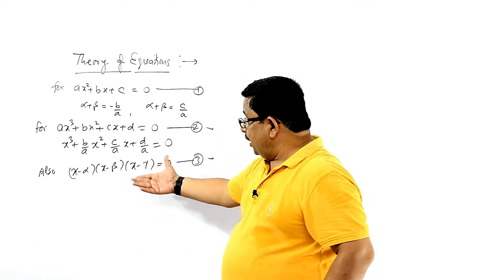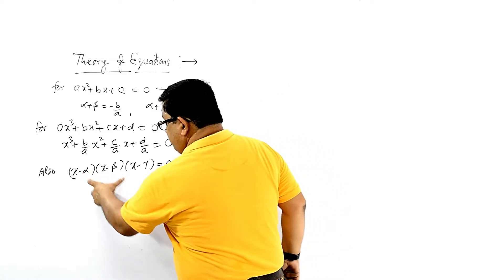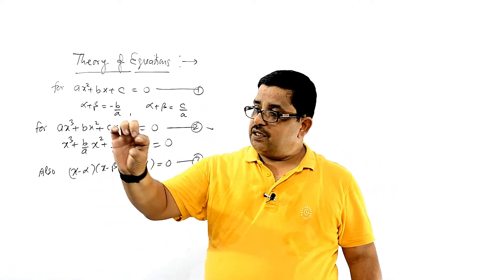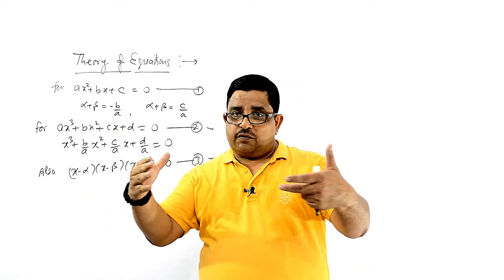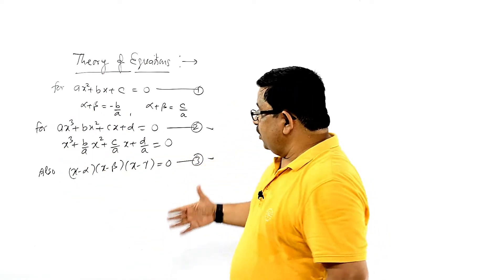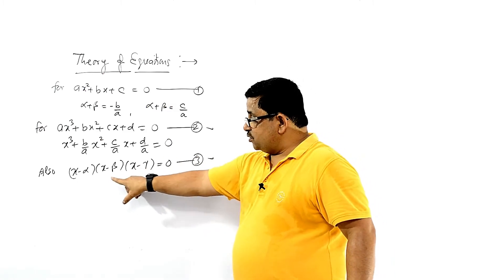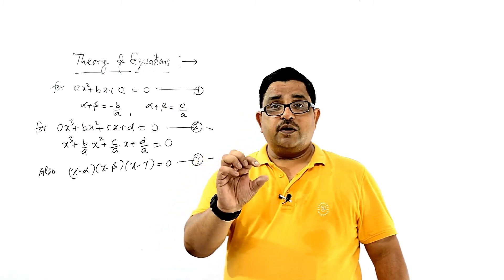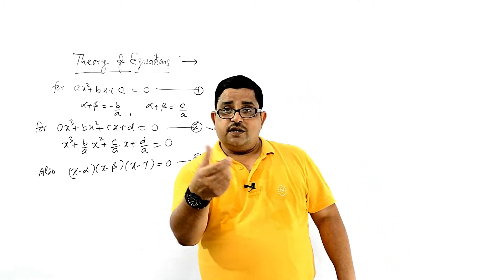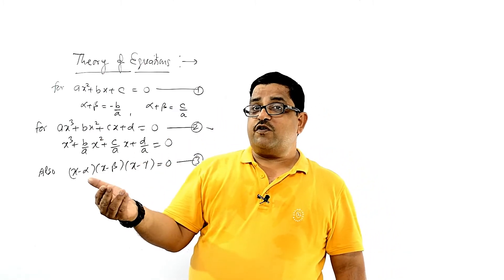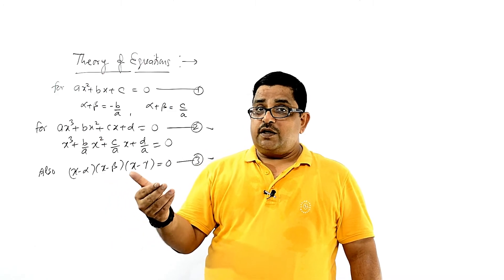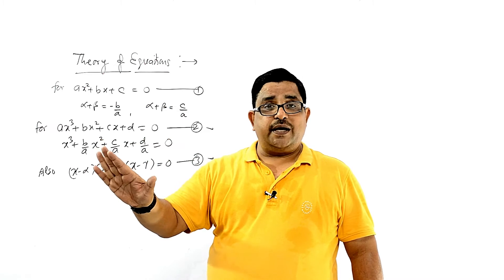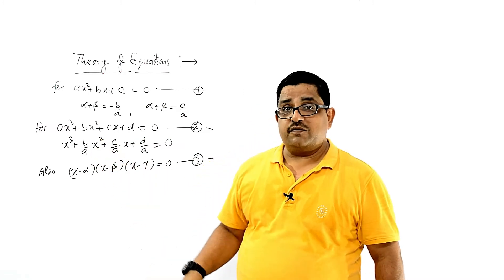If you fully expand and check the x³ coefficient, x² coefficient, x coefficient, and constant term, the coefficients will give us the sum of roots and the sum of pairs of roots: alpha·beta, beta·gamma, and gamma·alpha.